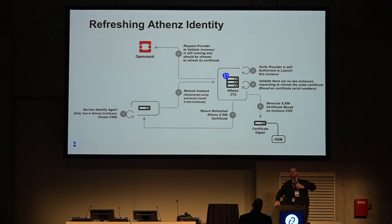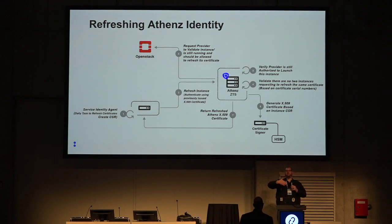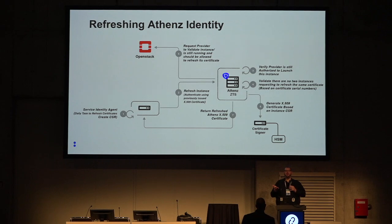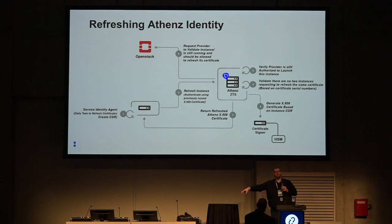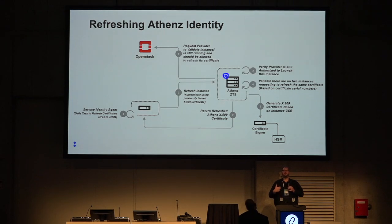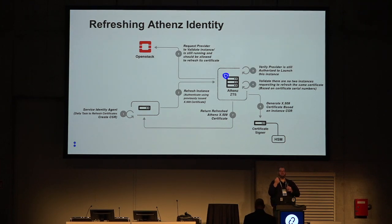Q: So effectively you're taking the user principal identity and through this chain of trust granting an instance its own identity? A: Yes, that's succinct. I have the right to declare that this thing should be granted an identity in this domain, and at that point I'm out of the loop — in the same way that someone at the passport office looks at your documents, stamps them, and now you have your own identity document.